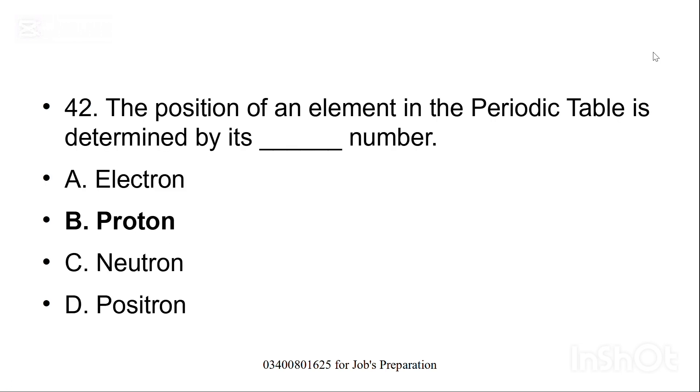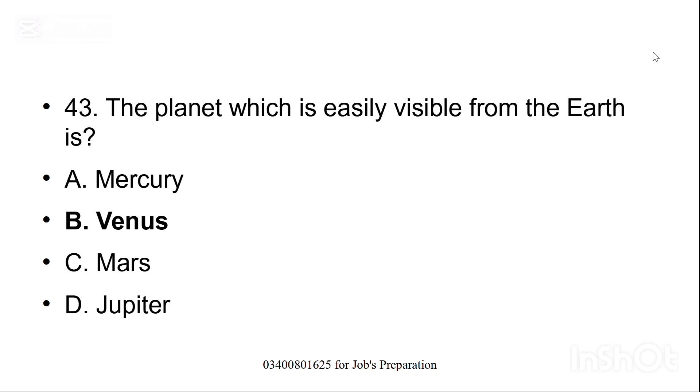The position of an element in the periodic table is determined by its dash number. Periodic table mein jo elements arrange hoti hain wo kis basis pe arrange hoti hain on the basis of number of protons. Option B is the correct option. The planet which is easily visible from the earth is, woh kaunsa planet hai jo ke earth se hum asani se dekh sakte hain. Option B, Venus is the correct option.